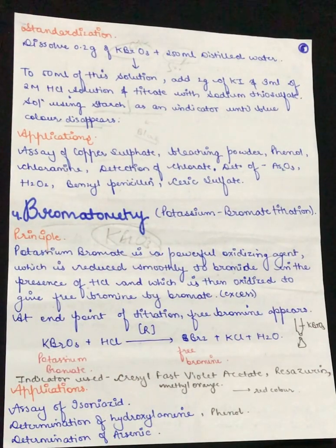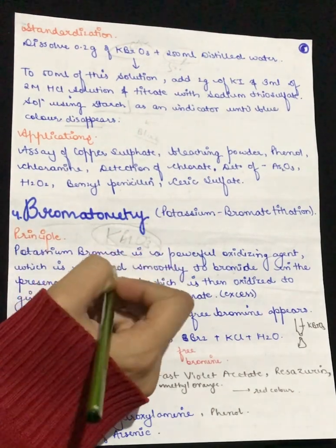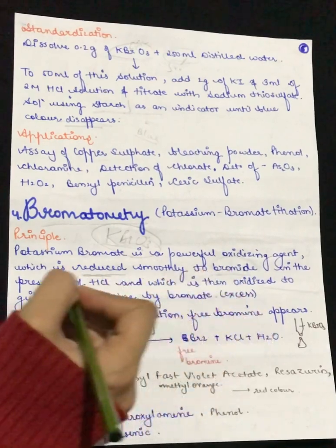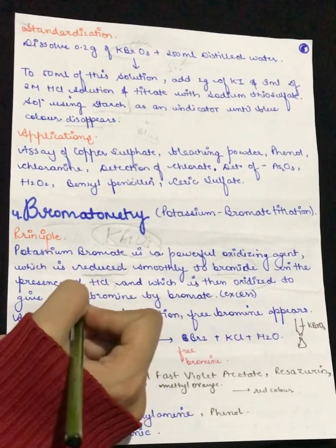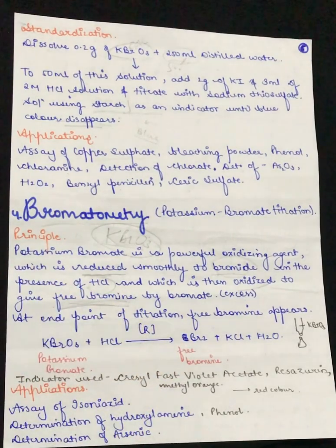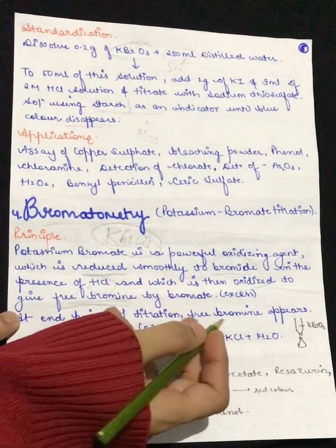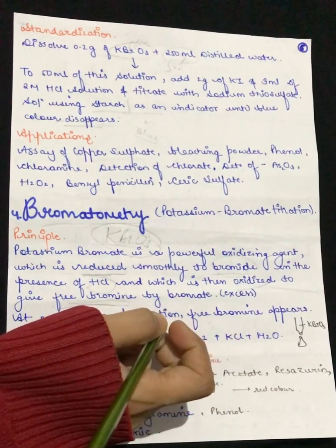This reaction occurs in two steps. First, potassium bromate is reduced to bromide. Then, bromide is oxidized in the presence of HCl to give free bromine. The endpoint of the titration is determined by the appearance of free bromine, which produces a color change.